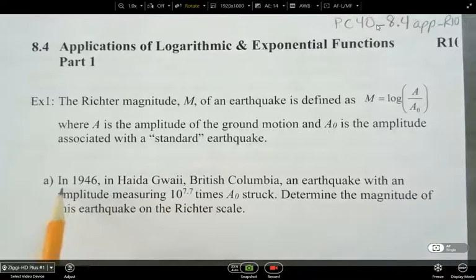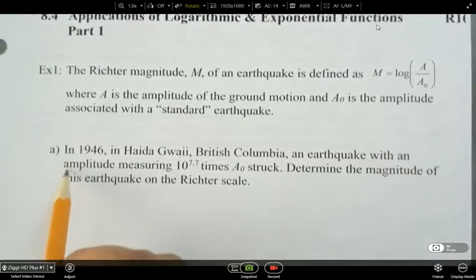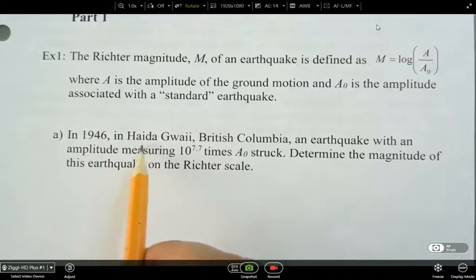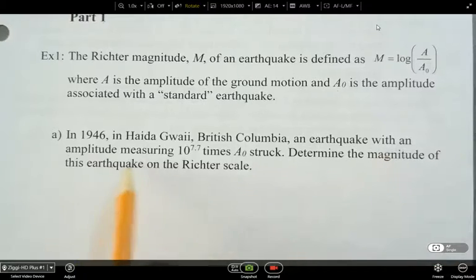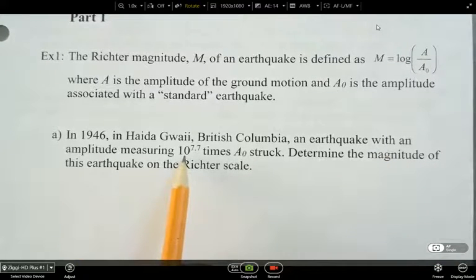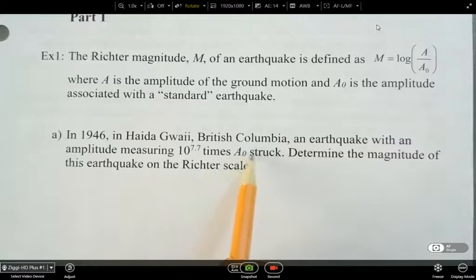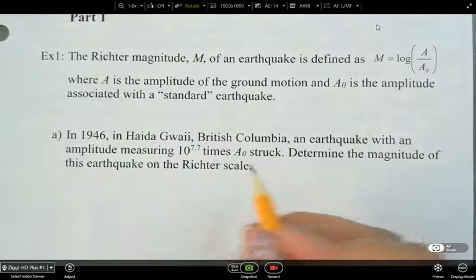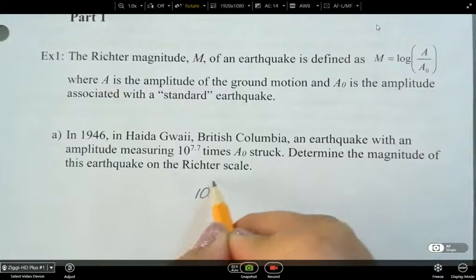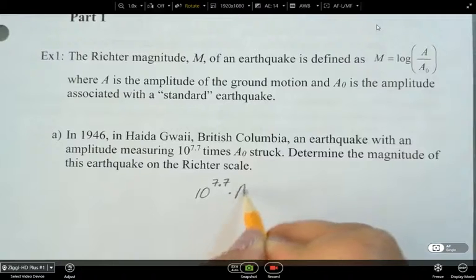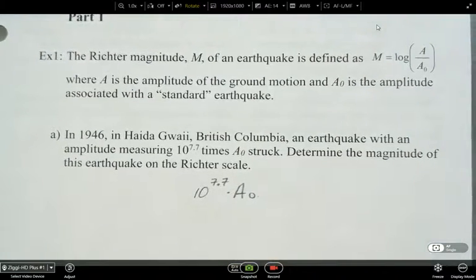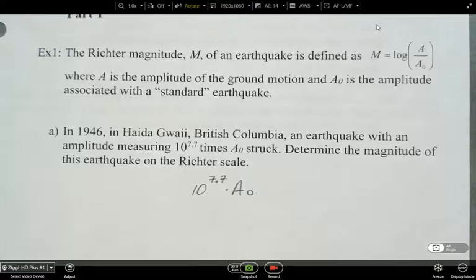So here, this is the little scenario we're looking at. 1946, Haida Gwaii, British Columbia, an earthquake with an amplitude measuring 10 to the 7.7 times A naught struck. So we need to determine the magnitude of this earthquake on the Richter scale.